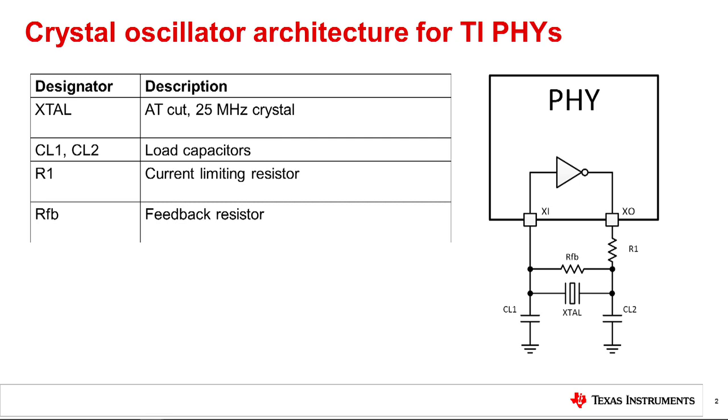R1 is a current limiting resistor that may be required if the maximum drive level of the crystal is less than 500 microwatts. Rfb is a feedback resistor to bias the inverter on startup conditions. The feedback resistor is usually in the order of megaohms and biases the digital inverter to serve as an analog amplifier. This resistor is not necessary in TI PHYs. Check the PHY datasheet to determine whether the feedback resistor is required.